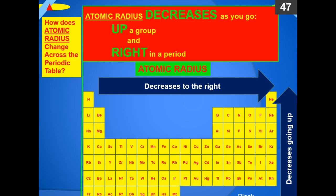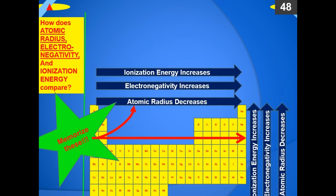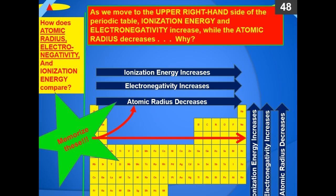As you go down the periodic table, you add orbitals. Why does the atomic radius increase as you go from left to right? Because you're adding more and more protons and more and more electrons. As we move to the upper right-hand side of the periodic table, ionization energy and electronegativity increase while the atomic radius decreases. Why does the atomic radius decrease as you add more protons and more electrons? It would seem like it should get bigger if you keep adding protons and electrons.